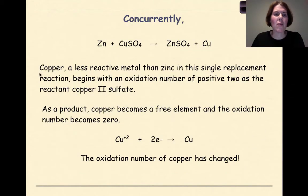At the same time, we have copper. Copper is a less reactive metal than zinc in this single replacement reaction. And the copper is going to begin with an oxidation number of positive two. Because I know that the sulfate ion right here is minus two, therefore the copper must be plus two. I also see that when I look at the name of copper two sulfate and the roman numeral right here says, hello, I'm plus two. As a product, copper becomes a free element and the oxidation number becomes zero. So we put a zero up here.